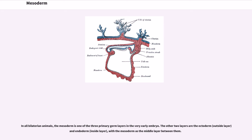In all bilaterian animals, the mesoderm is one of the three primary germ layers in the very early embryo. The other two layers are the ectoderm and endoderm, with the mesoderm as the middle layer between them.